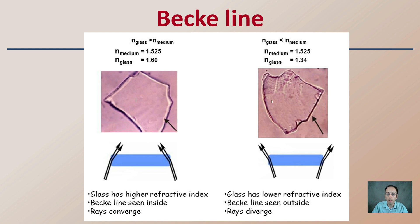In the opposite case where the glass has a lower refractive index, the Beck line is seen on the outside of the perimeter because the rays are diverging.